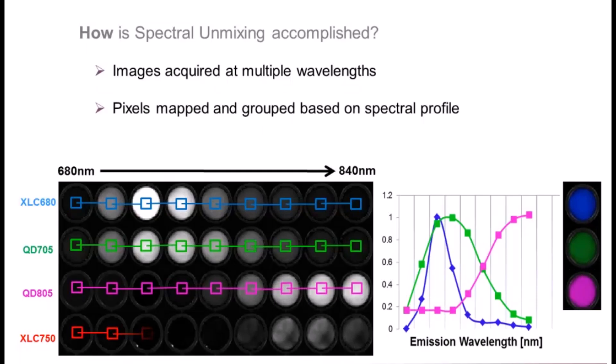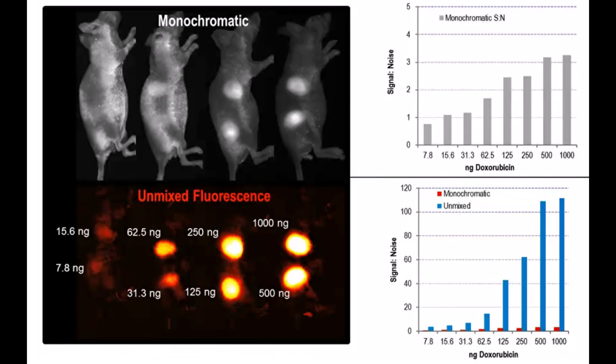This imaging approach can improve fluorescence imaging outcomes firstly by increasing signal to noise ratios, thus allowing detection of lower intensity sources. Tissue autofluorescence has a defined spectral signature and can be unmixed from probes effectively, resulting in background subtraction. After background removal, detection of signals that were previously masked by autofluorescence is now possible.